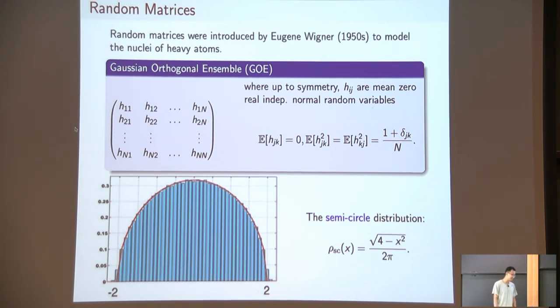So the nucleus of a heavy atom is a complicated quantum system. If you only care about the statistical property of it, then you should be able to model its Hamiltonian by this giant random matrix. In this way, the energy levels of the nucleus of the heavy atom should behave as the eigenvalues of its Hamiltonian.